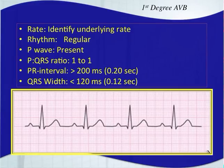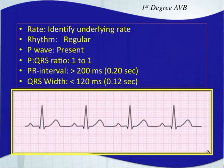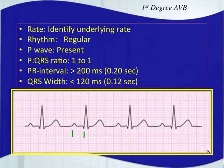The first degree AV block is the easiest one to remember. It's the same as a sinus rhythm — you just have a prolonged PR interval. That is the only difference. Your underlying rate will be whatever your rhythm's rate is. Your P waves are present, there are no dropped beats, and you have a one-to-one ratio — one P wave for every QRS complex. The PR interval is greater than one big box, meaning greater than 200 milliseconds or 0.20 seconds. The QRS should still be narrow.